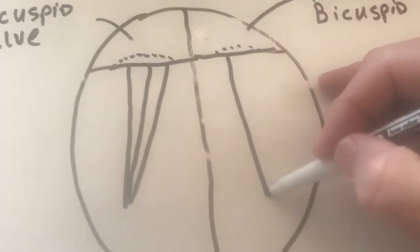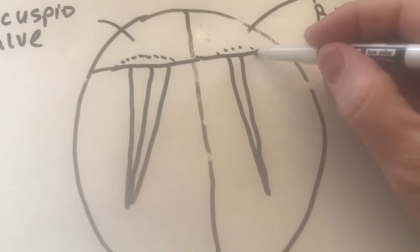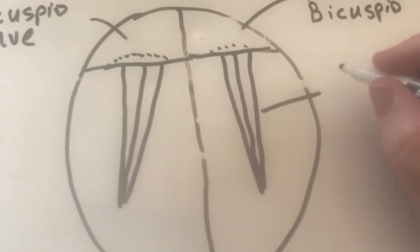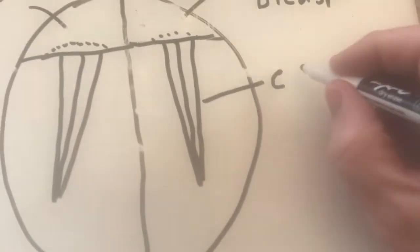Okay, so what you have is you actually have some cords called chordae tendinea. Okay, and they're like parachute cords. As I remember, that's the way it was described to me. And they're like elastic cords. So they're called chordae tendinea.